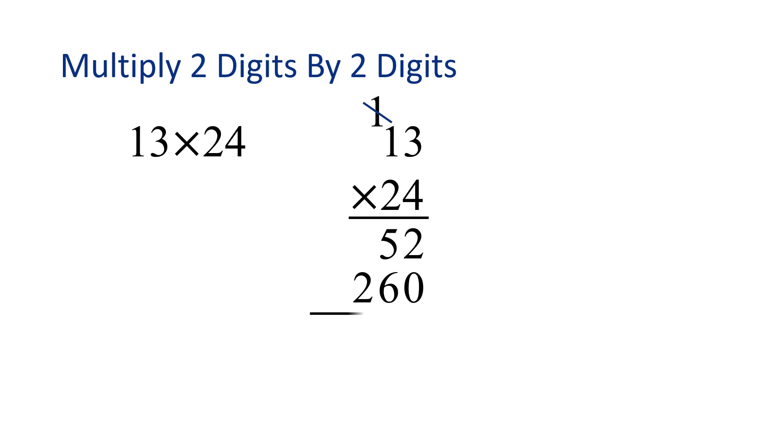Our next step is to add 52 plus 260. We'll add, as we usually do, working in our place values. 2 plus 0 is 2. 5 plus 6 is 11. Remember, we'll have to carry the 1, because we only write one digit down below. Now we can add 1 plus 2, which is 3. The product of 13 times 24 is 312. Great job!